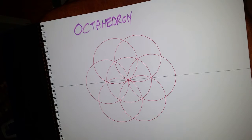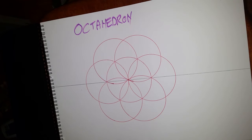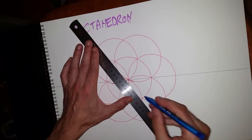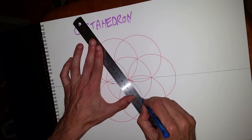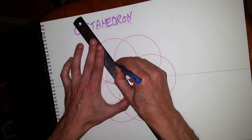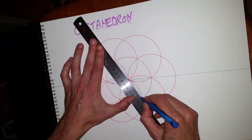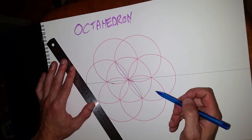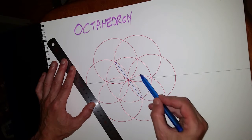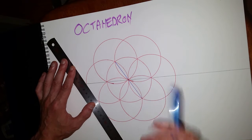Octahedron — eight sided. Again, we're going to have equilateral triangles, virtually identical. I'm going to start by going across through the middle, and so we're going to have one, two, three — but we need a fourth.